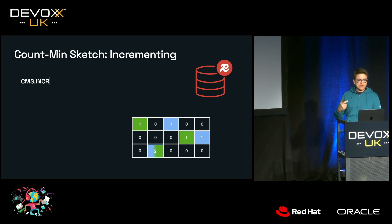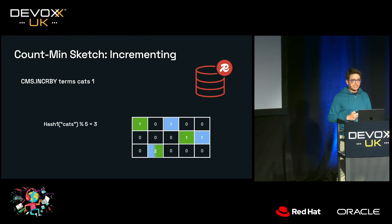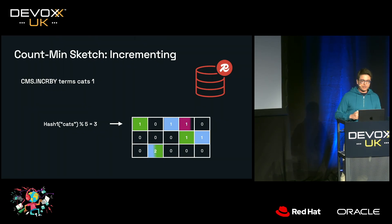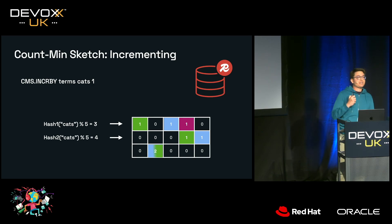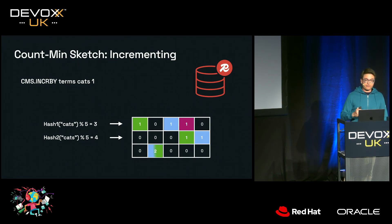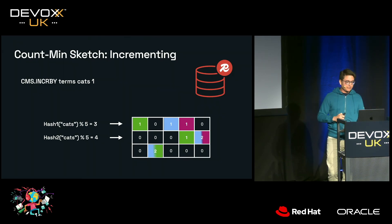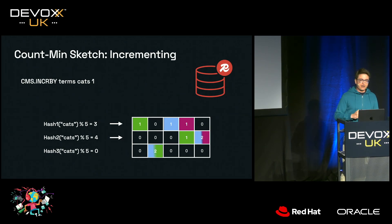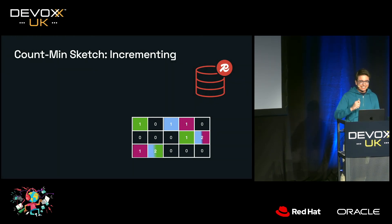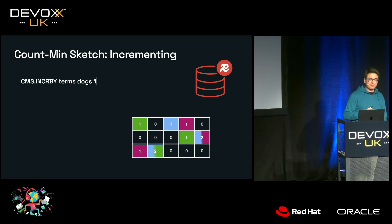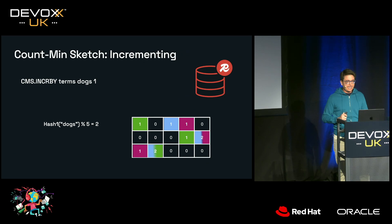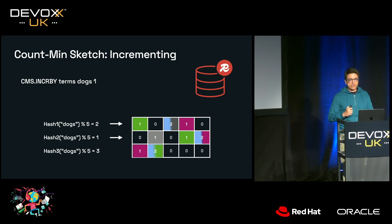Now let's count another term: 'cats.' Redis performs the same hashing functions and increments the counters. For the first row, it's column 4. For the second, we have another hash collision, incrementing column 5 of row 2 again — it's been incremented twice. For the last, it increments column 1 of row 3. Then let's also count 'dogs.' For the first row, we have another hash collision, incrementing that counter again. For the second and third, no collisions — we increment column 2 and column 4 respectively.